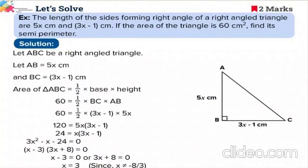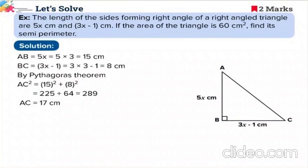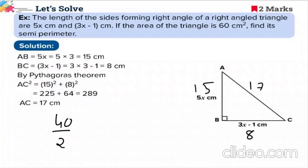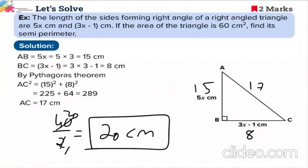We need to find the semi-perimeter. The three sides are 15, 8, and 17 cm. So semi-perimeter s = (15 + 8 + 17) / 2 = 40 / 2 = 20 cm. The final answer is 20 cm.